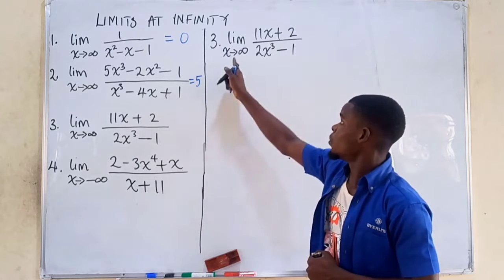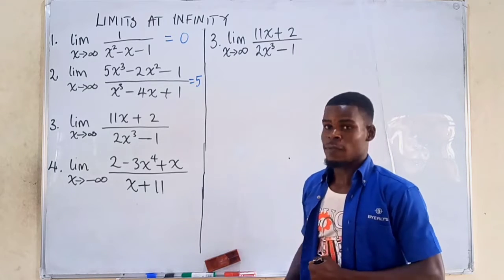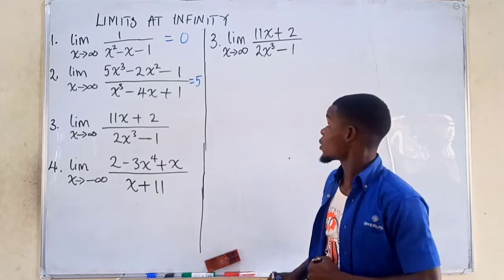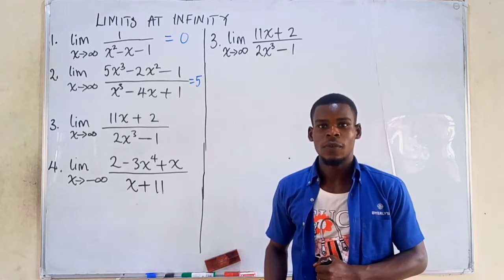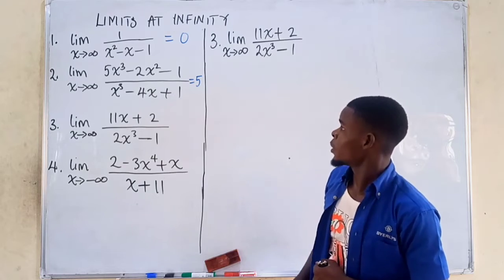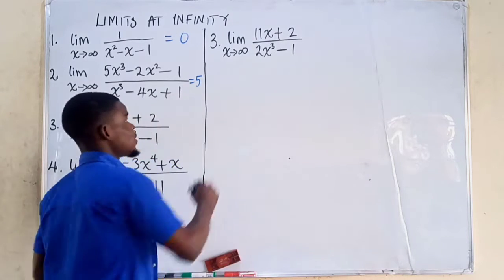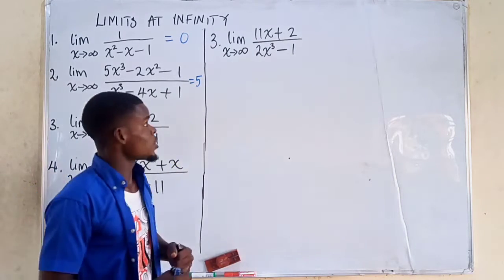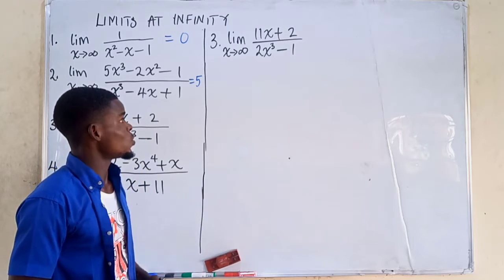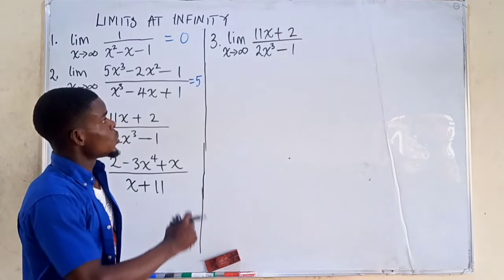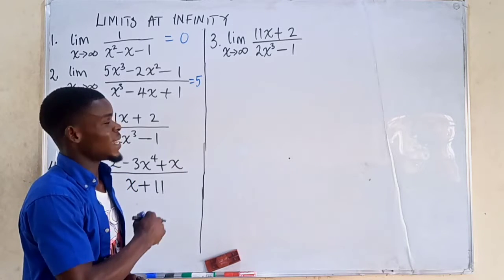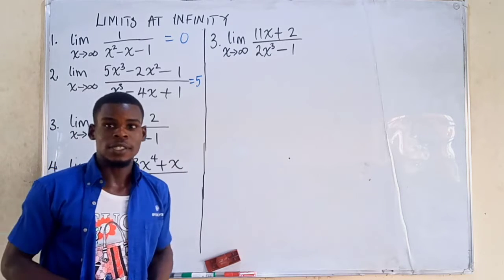We have the limit as x tends to infinity of 11x plus 2 divided by 2x cubed minus 1. To find the limit of this rational function, where the numerator is a polynomial and the denominator is also a polynomial, we will divide the numerator and denominator by the highest exponent in the denominator.